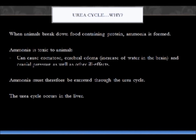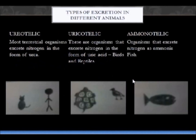Why do we need the urea cycle? When animals eat food containing protein and this is broken down, ammonia is formed. Ammonia is bad because it is toxic to animals — it can cause comatose and other problems associated with the brain. It therefore must be excreted through the urea cycle, and this occurs in the liver. Different types of excretion: ureotelic occurs in most terrestrial organisms that excrete nitrogen in the form of urea, such as humans, cats, and dogs.